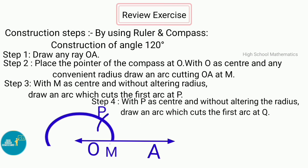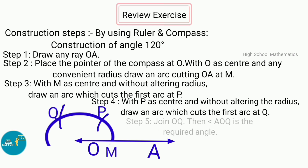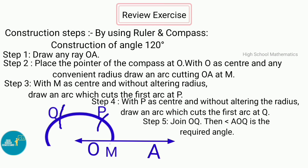Step 4 — with P as center and without altering the radius, draw an arc which cuts the first arc at Q. Step 5 — join OQ. Then angle AOQ is the required angle, that is 120 degrees.